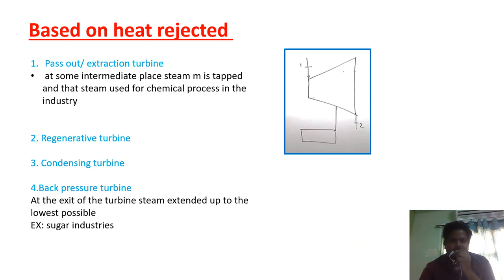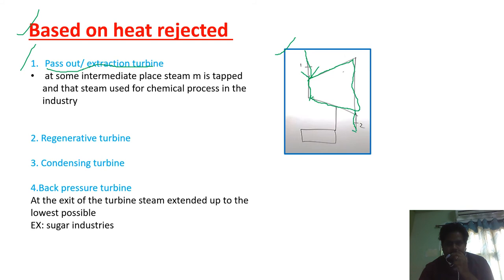The other classification is based on heat rejected. The first type is the pass-out or extraction turbine. Steam enters the turbine at point 1 and leaves after expanding through the turbine at point 2. In the pass-out or extraction turbine, at some intermediate place before full expansion, some amount of steam is extracted and used for industrial processes. This is called a pass-out or extraction turbine.